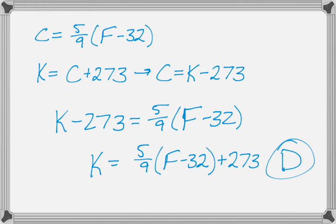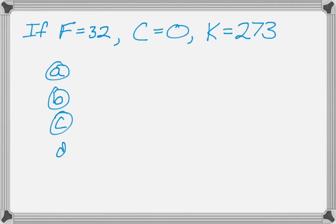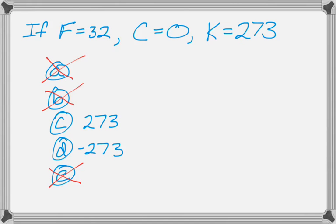There's actually another way to do this. If f was equal to 32, then c would be equal to 0, and k would be equal to 273. Then if you look at the answer choices, you can actually eliminate a bunch of them right away, because k is definitely not 273 in A, B, or E if we make those substitutions. And then for C and D, you get 273 and negative 273, but since we want positive 273, we would go with the option C.